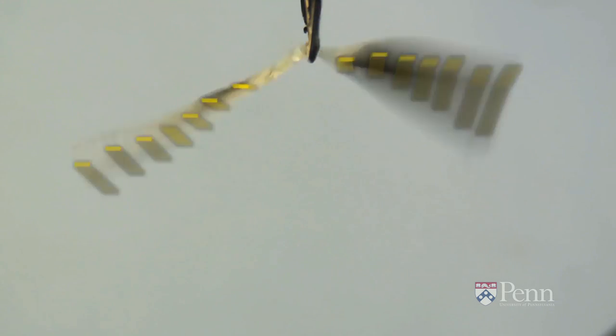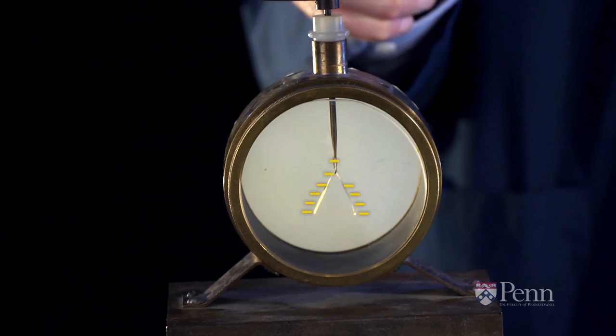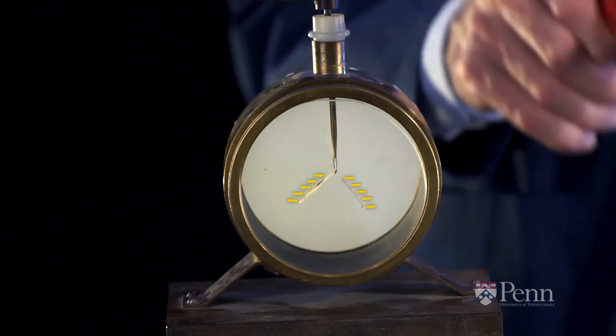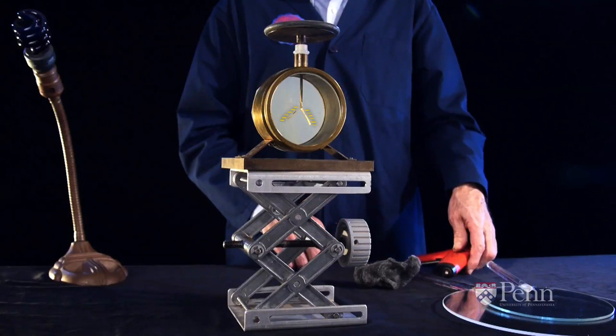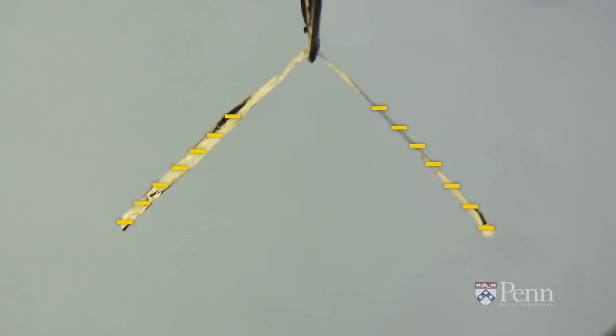When we do that, the charge runs down through the connecting rod to the gold leaf. Both sides of the gold leaf get negative charge, they repel each other, and the gold leaf hangs at an angle, telling us that there's a charge.